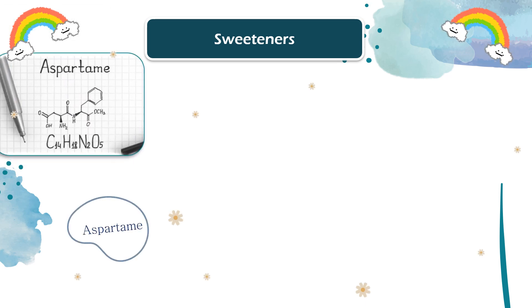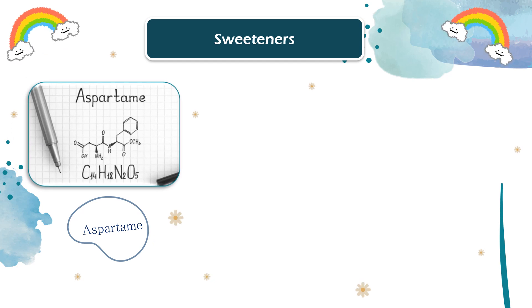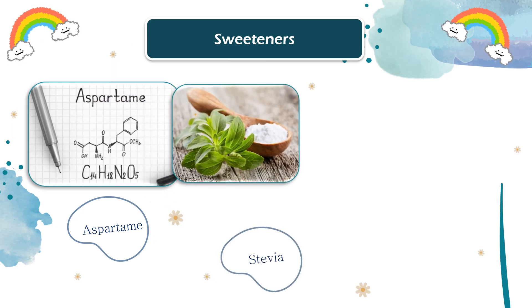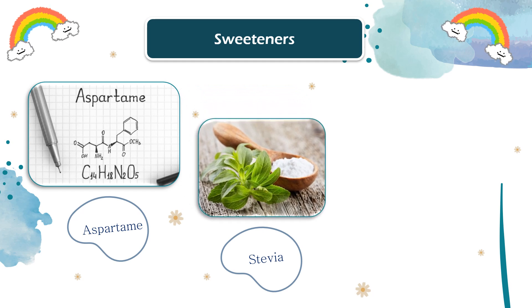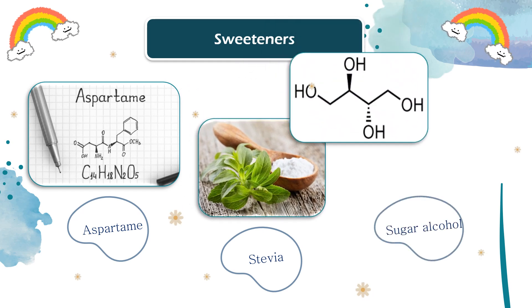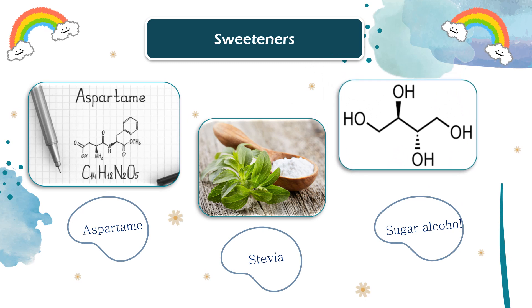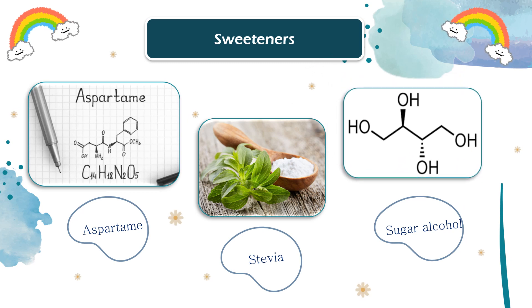1. Aspartame is an artificial sweetener made from two amino acids, phenylalanine and aspartic acid. 2. Stevia is a natural sweetener made from the leaves of the stevia plant. 3. Sugar alcohols — the most used in sugar-free gum are xylitol, isomaltose, maltitol, mannitol, and sorbitol.